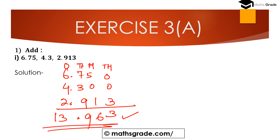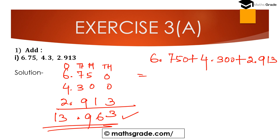Let's verify with horizontal addition: 6.75 + 4.3 + 2.913. Since 2.913 has 3 digits after the decimal, we place zeros to get 6.750 + 4.300 + 2.913. Adding gives the same result: 13.963. So the addition of 6.75, 4.3, and 2.913 is 13.963.